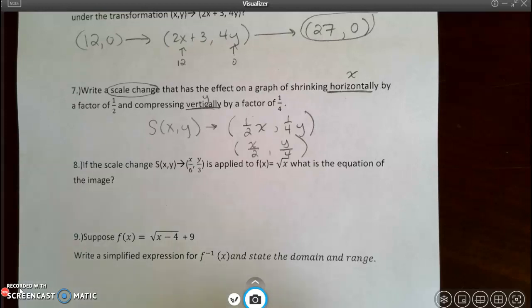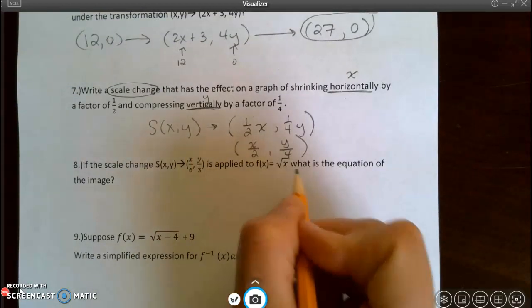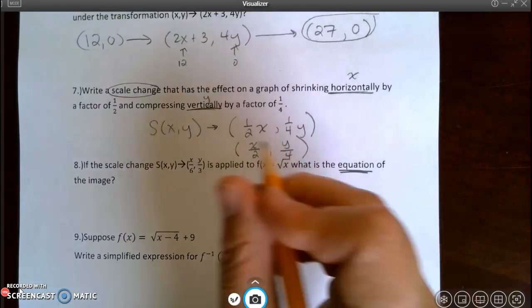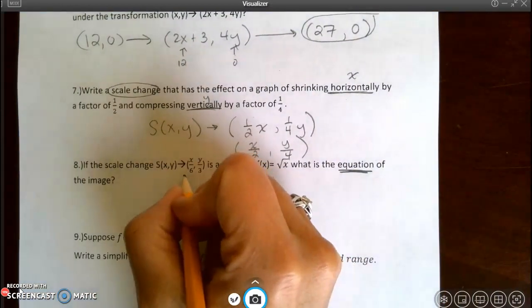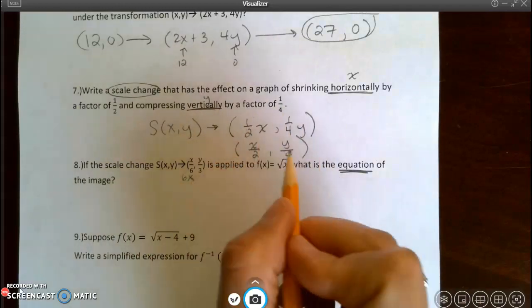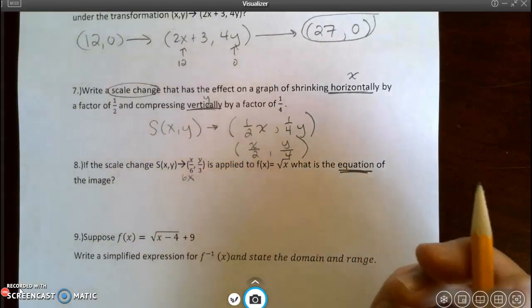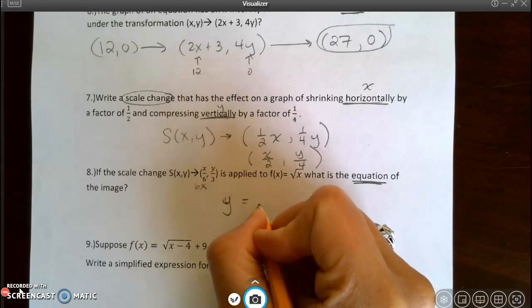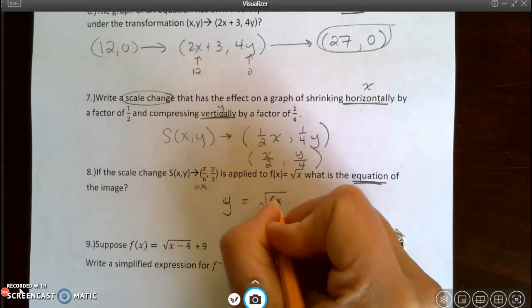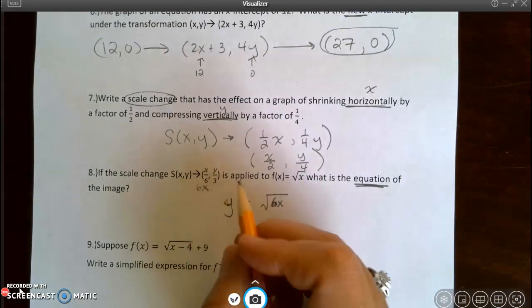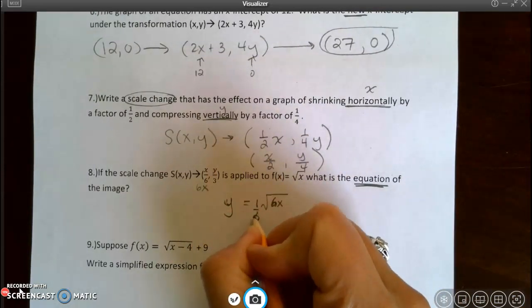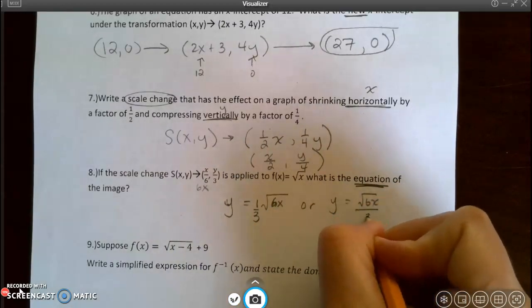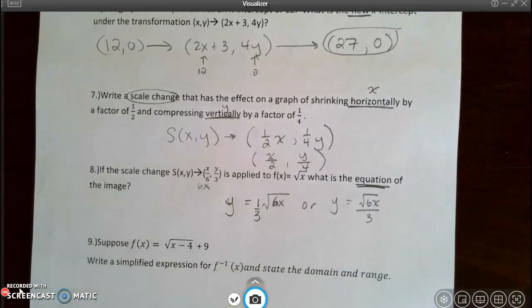Let's go to number 8. If the scale change that's given here is applied to this function, what is the equation? All right, let's remember x lies. So this says x divided by 6, so in the equation it's going to be 6x. And y is still going to be divided by 3. So y equals the square root of 6x. And I want the whole thing, you can think of it as multiplied by a third. You could also write this as y equals the square root of 6x all divided by 3. They mean the same thing.